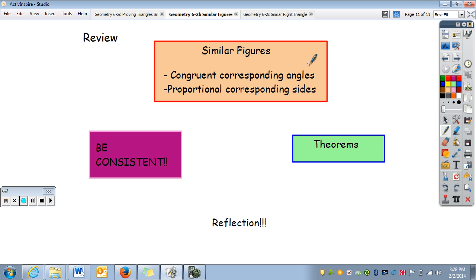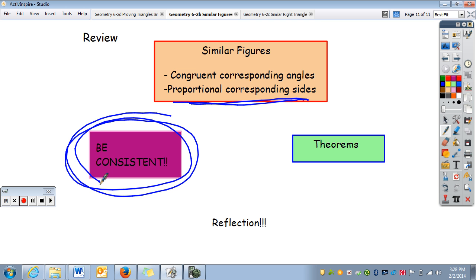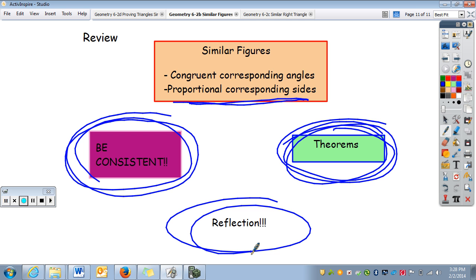To review, similar figures need to have corresponding angles, or congruent corresponding angles. And the sides need to be proportional. Again, be consistent. Put corresponding parts together when you're setting up your proportion. And the theorems. Just really, you're going to have to apply the theorems. You're not really going to know them. But know those situations that you're allowed to set up proportions. Reminder to do reflections to get credit for watching this video.